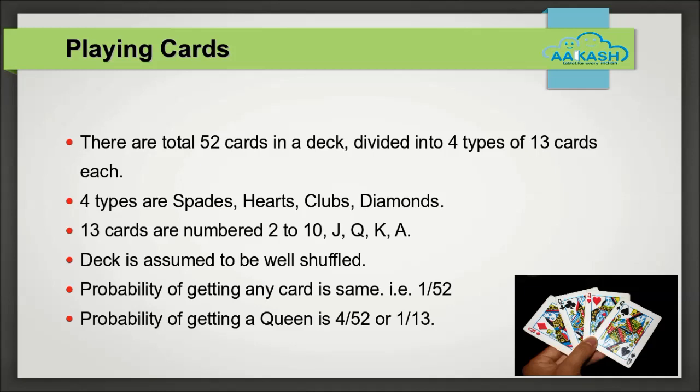Similarly, there are two red kings. Hence, probability of getting a red king is two by 52, which is one by 26.